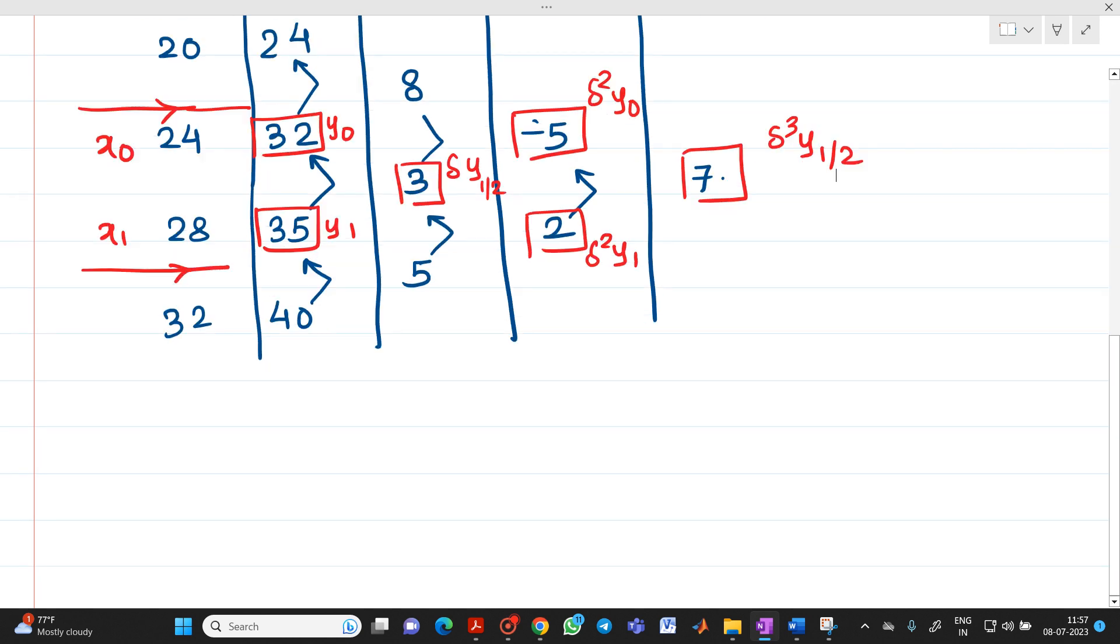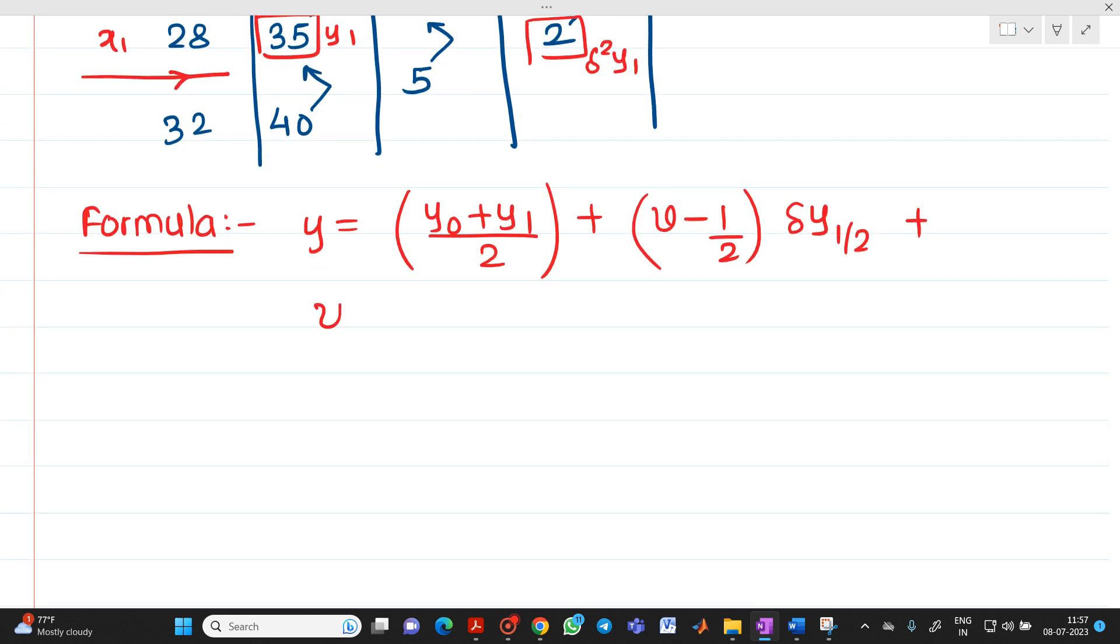So let me write here the formula of Bessel's interpolation. So what is the formula of Bessel's interpolation? It is y = (y₀ + y₁)/2 + (v - 1/2) × Δy₁/₂ + [v(v-1)/2!] × [(Δ²y₀ + Δ²y₁)/2]